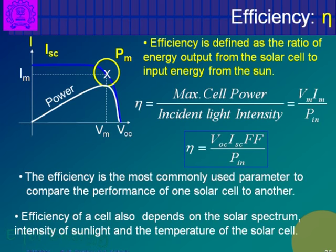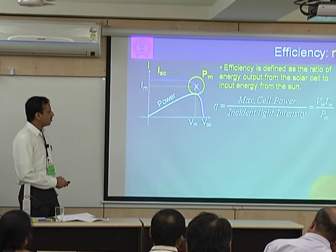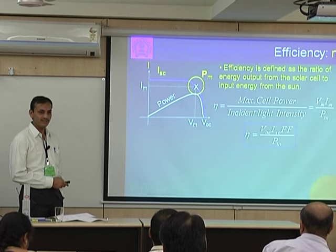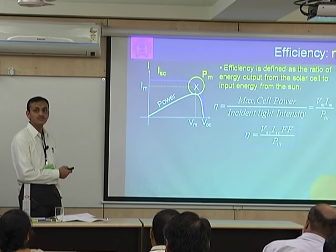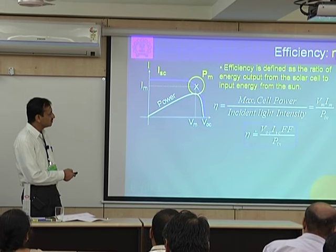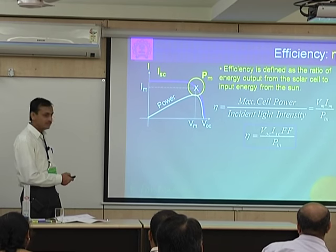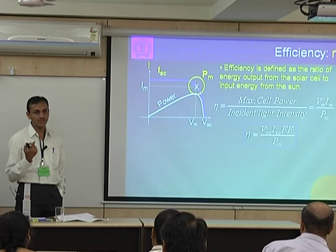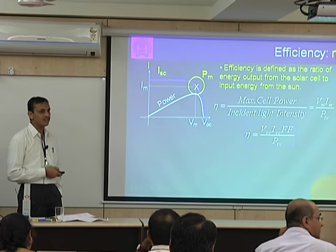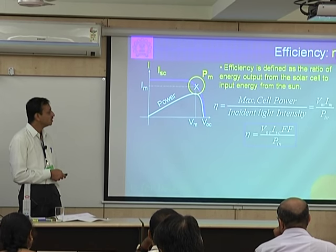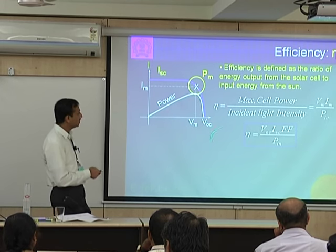The most important parameter is efficiency — maximum power Vm × Im divided by input power Pin. Input power is given by air mass 1.5G, normally 1000 watt per meter square. Efficiency can also be written in terms of Voc, Isc, and fill factor. Using typical values — Voc of 0.55–0.6V, Isc of 30–35 mA/cm², fill factor of 70–80 percent — you can calculate that efficiency comes in the range of 14–16 percent. This is a homework assignment to be completed before tomorrow's lecture.